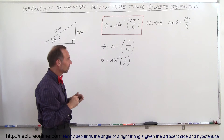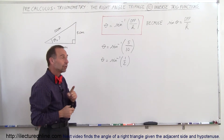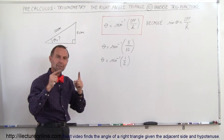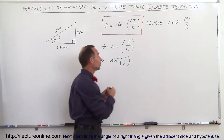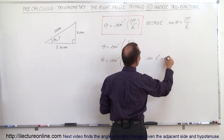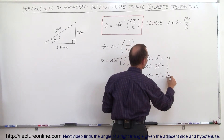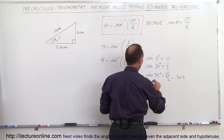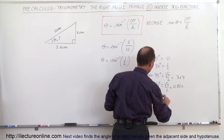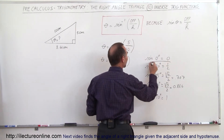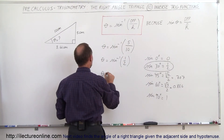Ask yourself: for what angle of theta is the sine of that angle equal to one half? The sine of 0 degrees is equal to 0. The sine of 30 degrees is equal to one half. The sine of 45 degrees is equal to the square root of 2 over 2, which is 0.707. The sine of 60 degrees is equal to the square root of 3 over 2, which is 0.866. And the sine of 90 degrees is equal to 1. So the sine of 30 degrees is one half, which means the arc sine of one half is equal to 30 degrees. Therefore theta is equal to 30 degrees.